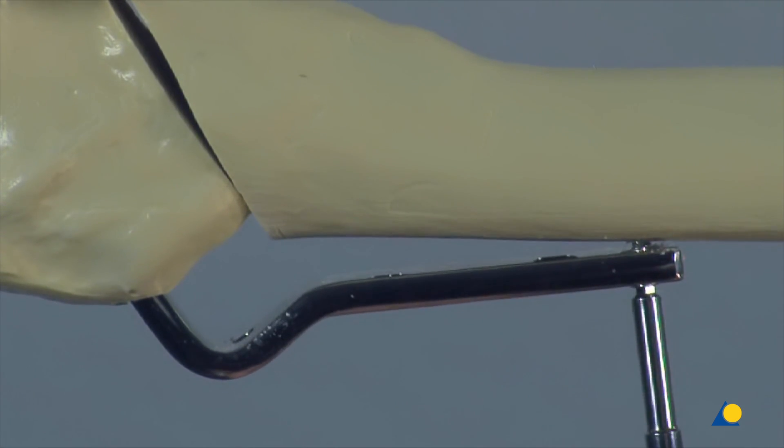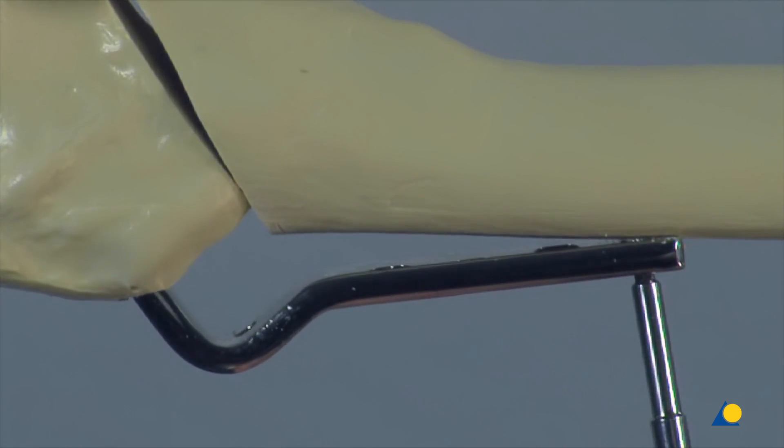A neutral 4.5 millimetre monocortical screw is inserted in the distal plate hole as a temporary measure.